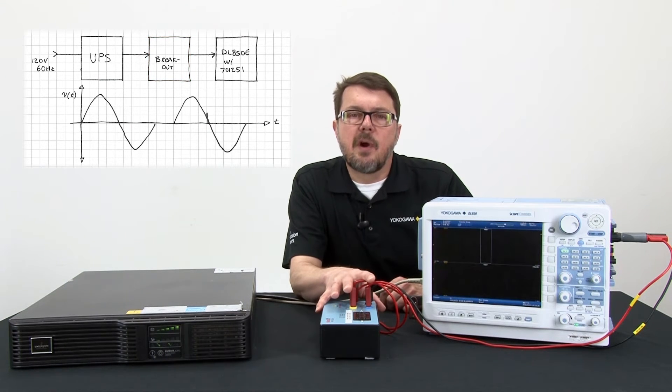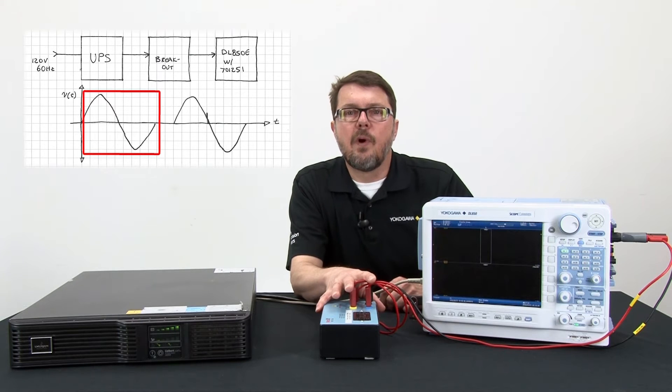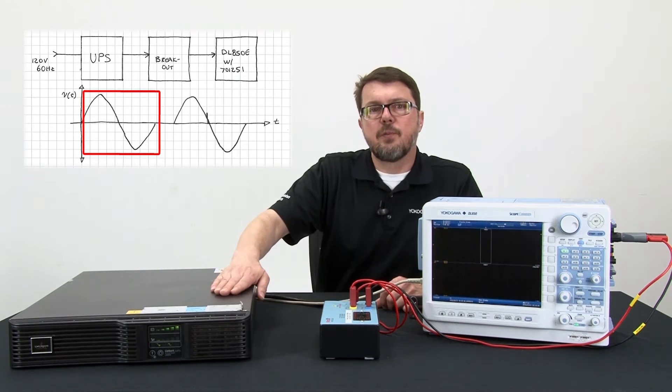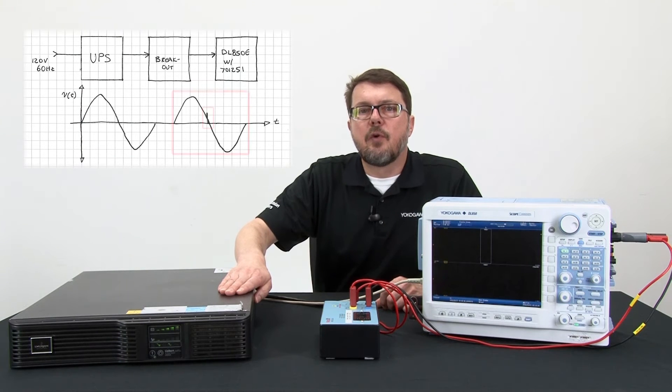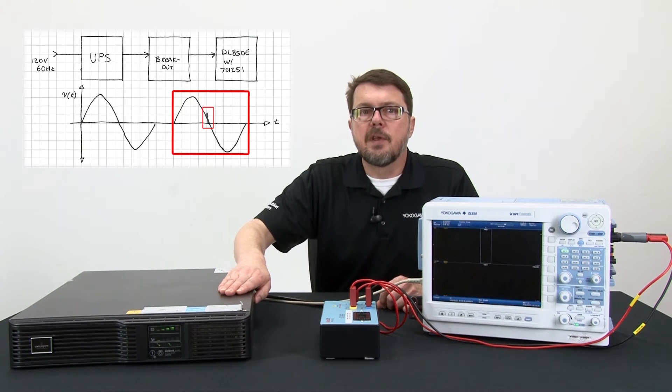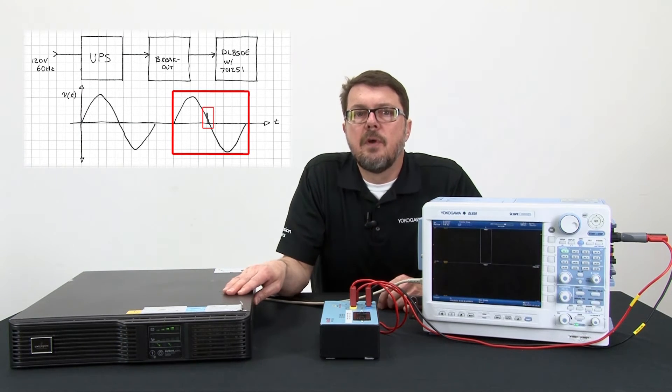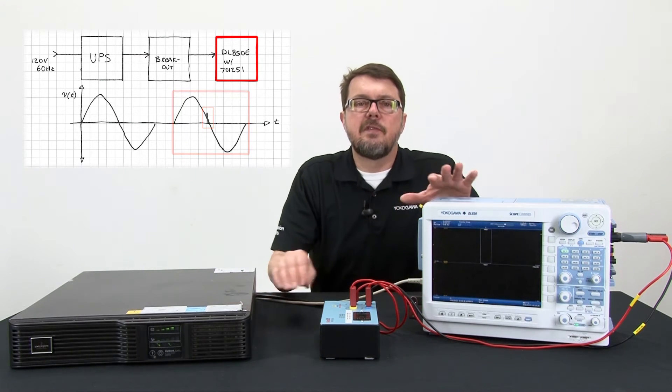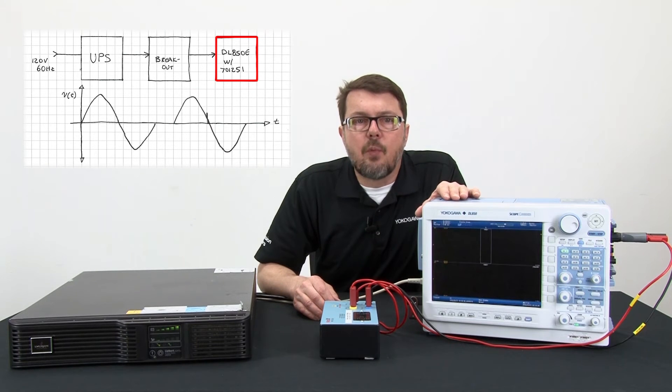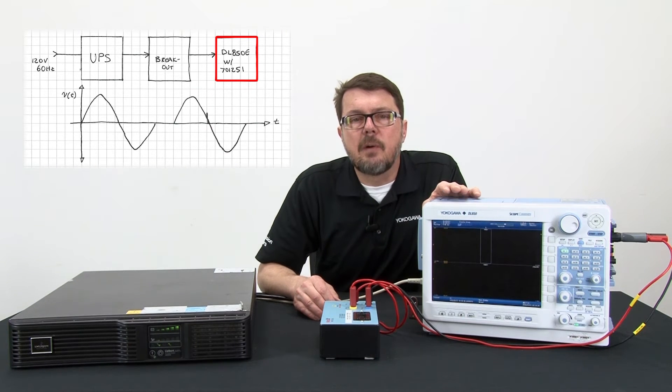I'm set up so that I can monitor the UPS voltage waveform while I force the UPS to switch from mains power to inverter battery output. There will be a very small glitch or anomaly on that AC waveform when that switchover occurs, and I want to catch and view that on the DL850 scopecorder. To do that, I'm going to use the wave window trigger, a standard trigger option on the DL850E.